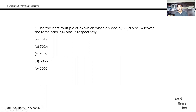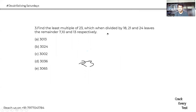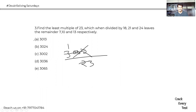Find the least multiple of 23 which when divided by 18, 21, and 24 leaves remainders of 7, 10, and 13 respectively. You must understand the question first — most people don't do that. We check: 3013 is a multiple of 23, and 3013 minus 7 = 3006.